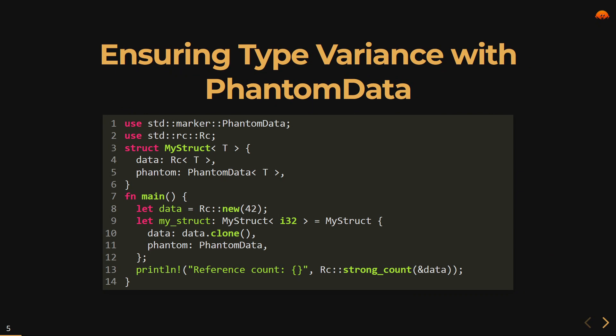Ensuring type variance with PhantomData: imagine we are using smart pointers like Rc or Arc. By employing PhantomData we can ensure proper type variance, preventing issues such as premature data drops or invalid references. In this example MyStruct contains a field of type Rc, a reference-counted smart pointer. These smart pointers allow multiple references to the same data, but ensuring type variance is crucial. With PhantomData the Rust compiler can enforce covariance and contravariance, ensuring our code adheres to the intended type relationships and preventing data from being dropped prematurely or referenced beyond its intended lifetime.